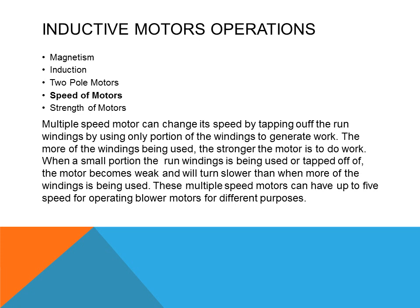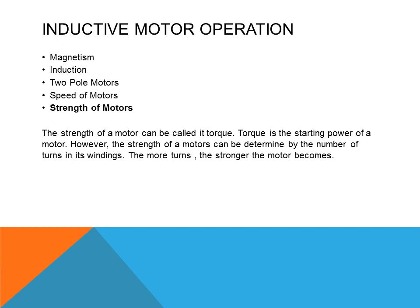Multiple speed motors can have up to five speeds for operating blower motors for different purposes. Most residential furnaces will use a split phase motor that is also a multiple speed motor, with speeds to control different volumes of air for air conditioning and heating. The strength of the motor can be called its torque — the starting power of a motor. The strength of a motor is determined by the number of turns in its windings; the more turns, the stronger the motor becomes.